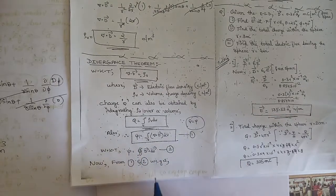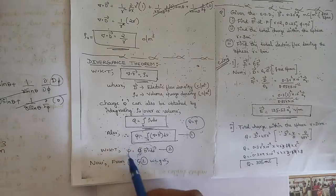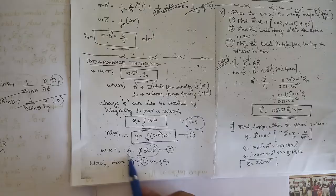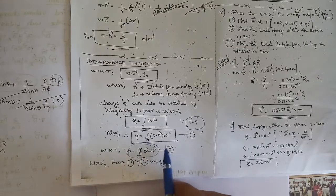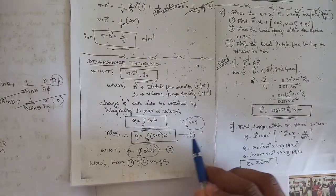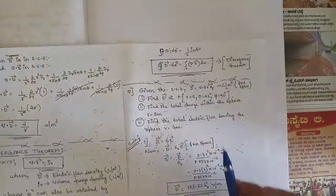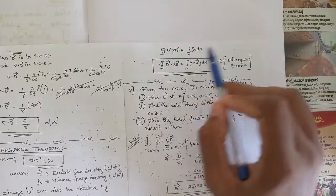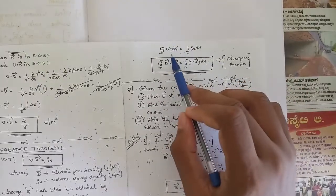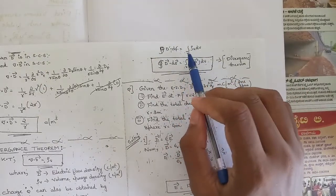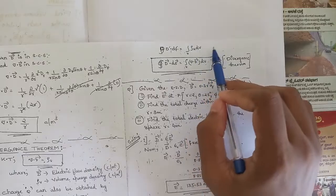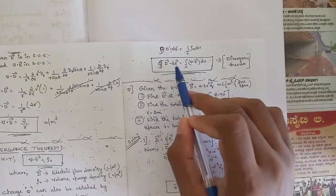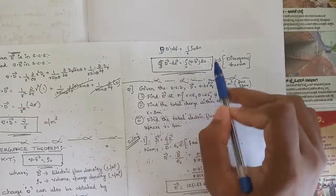Also, we know that psi is equal to the surface integral of D dot dS — this also comes from Gauss's law, which we have already studied. Write this as equation two. From equation one and equation two, equating the psi terms: surface integral of D dot dS is equal to volume integral of rho_v dv. Since rho_v equals del dot D, surface integral of D dot dS equals volume integral of del dot D dv.